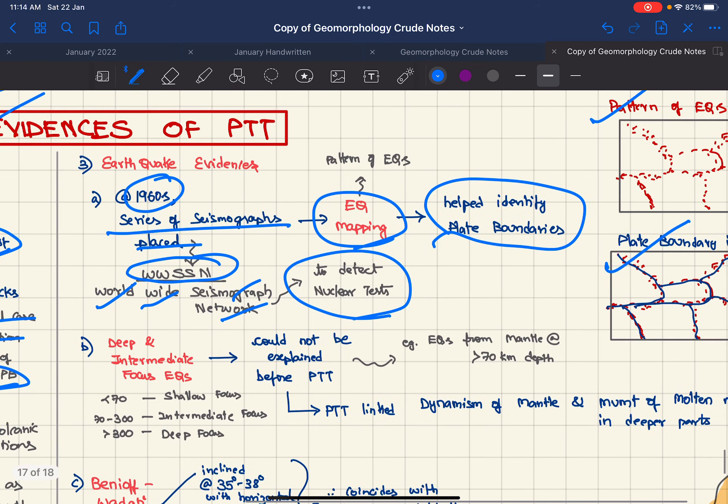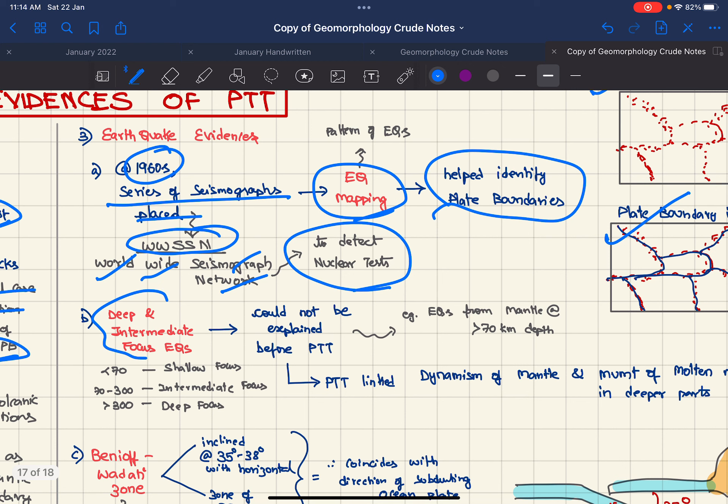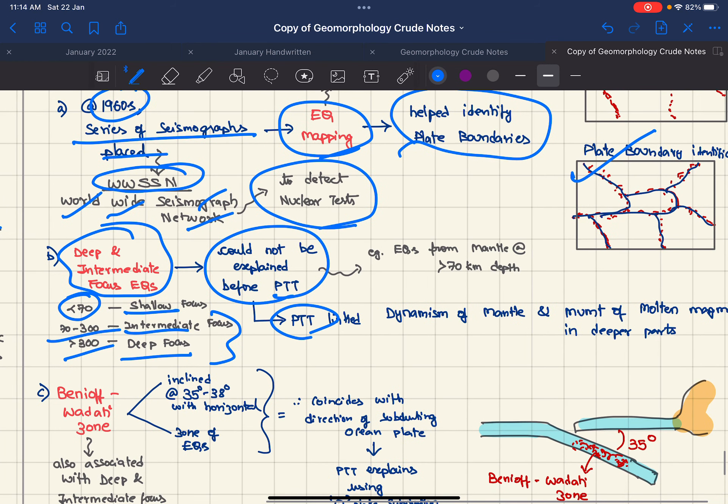Also, deep and intermediate focus earthquakes. If it is less than 70 km it will be shallow focus, 70 to 300 is intermediate, greater than 300 is deep focus. These two types of earthquakes could not be explained before PTT. PTT linked the dynamism of mantle and movement of molten magma and deep parts with these earthquakes, offering an explanation.